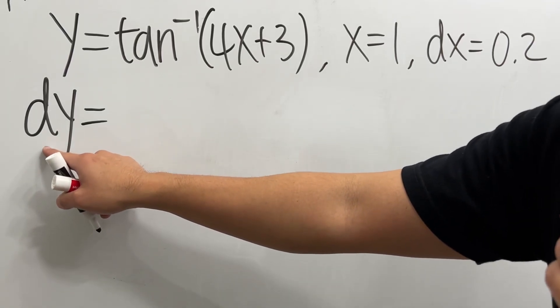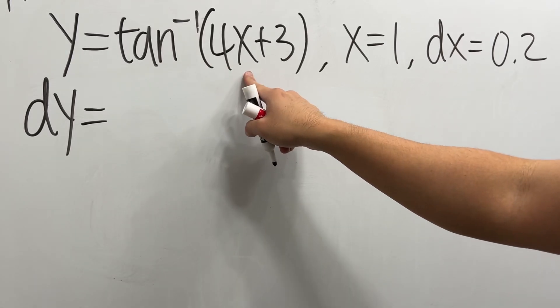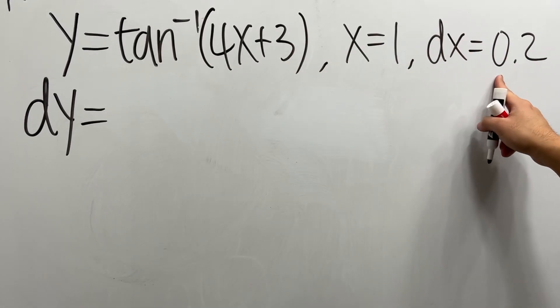How do we get the differential dy, given y is equal to inverse tangent of 4x plus 3, x is equal to 1, and dx is 0.2?